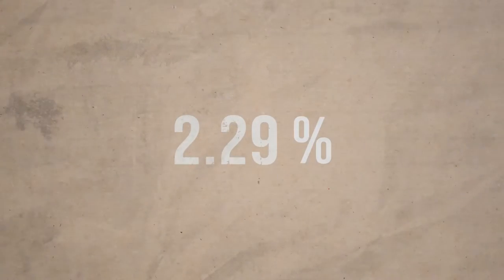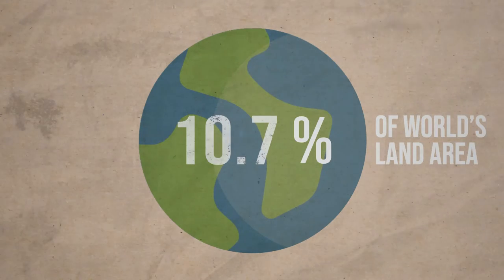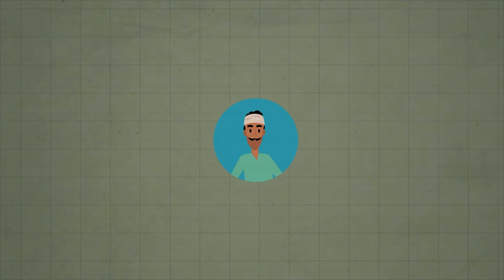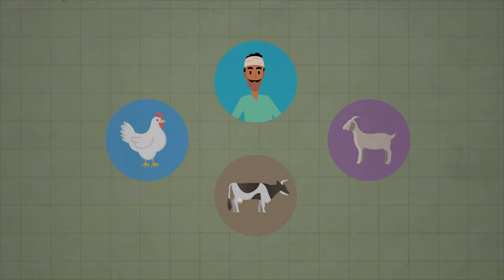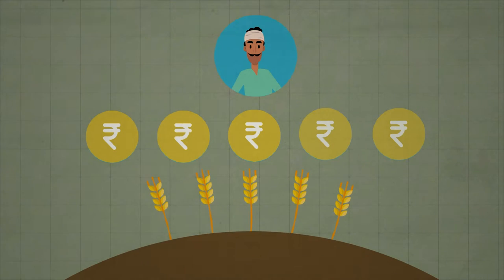2.29% of the world's land area supports 10.7% of the world's livestock. Small farmers rely heavily on livestock as an additional source of income and a safety net during times of climate-induced crop failures.